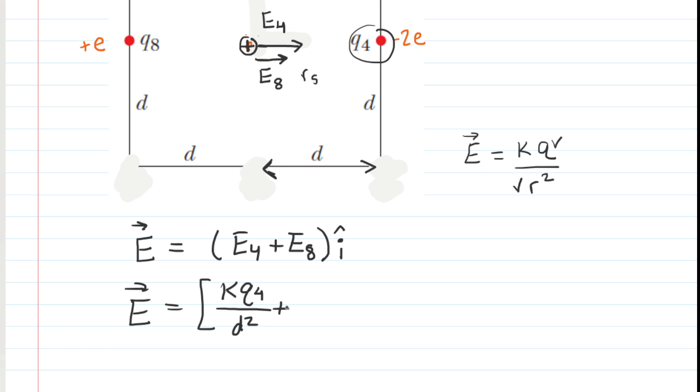And then we're going to add E8, the electric field produced by charge 8. That's going to be K times the magnitude of Q8 divided by, well, it's the same distance. Look at Q8. It is also a distance of D to the center of the square. So that'll be over D squared.